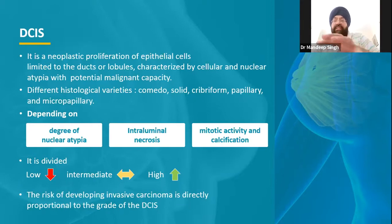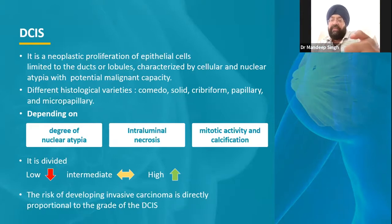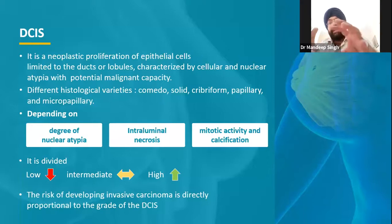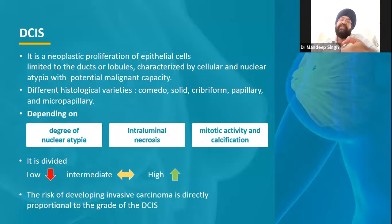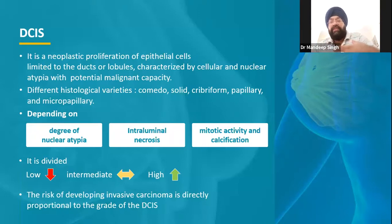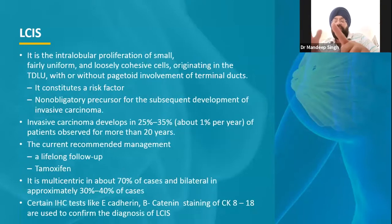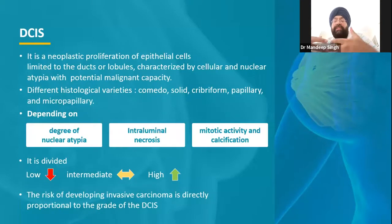Ductal carcinoma in situ will, in the majority of cases, invariably progress into invasive carcinoma. If it is high grade, it may progress very fast and the cancer it forms will be aggressive. If it is low grade, the time it takes will be longer and the cancer formed will be a low-grade cancer. This is how ductal carcinoma actually progresses.